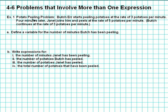Okay, let's read the problem carefully. The potato peeling problem: Butch starts peeling potatoes at the rate of three potatoes per minute. Four minutes later, Janet joins him and peels at a rate of five potatoes per minute. Butch continues at the rate of three potatoes per minute.